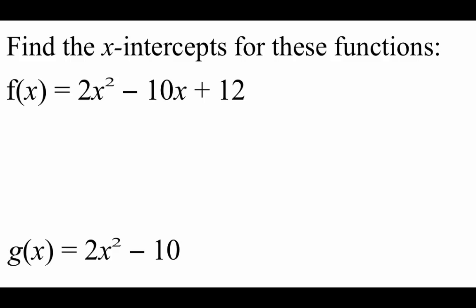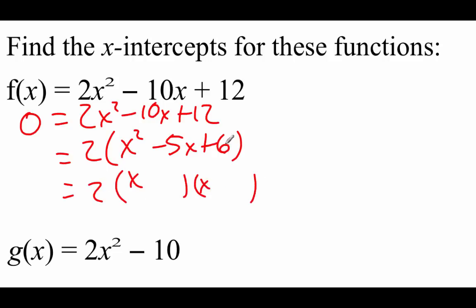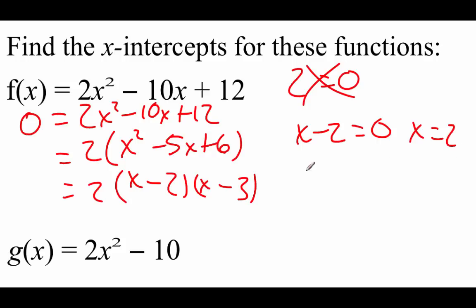There are going to be three more examples on this page — feel free to pause the video and go through these on your own. Taking a look at this one: f of x equals 2x squared minus 10x plus 12. Again, replace the left-hand side with a 0. I'm going to factor out the a value so we end up with x squared minus 5x plus 6. Factoring: we need to multiply to 6 and add up to negative 5, so negative 2 and negative 3. Setting each factor equal to zero gives x equals 2 and x equals 3.